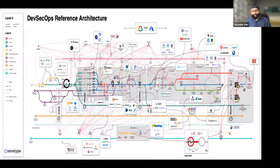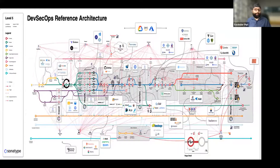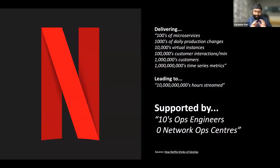Next I want to share the DevSecOps reference architecture by Sonatype — again publicly available — not to drill deep into it, but just to give you a sense of the complexity of the ecosystem out there.